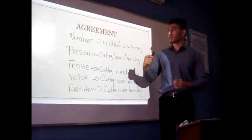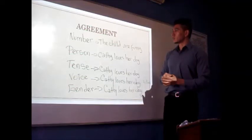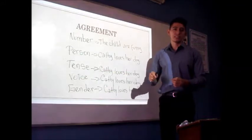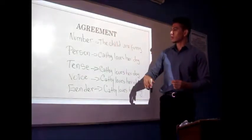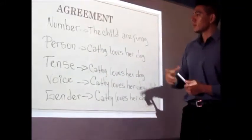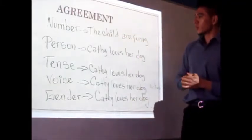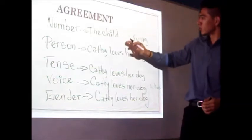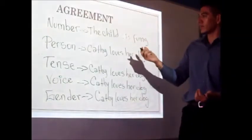Now, I am going to introduce the parts of agreement, which is part of the traditional grammatical analysis. Agreement deals with the concordance implied within a sentence, and it is divided into number, person, tense, voice, and gender. For number, the sentence 'the child are funny' has a mistake because 'child' is singular, so the verb must be singular too: 'the child is funny.'